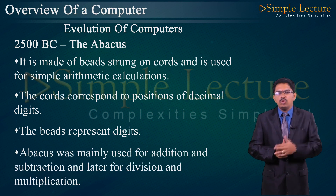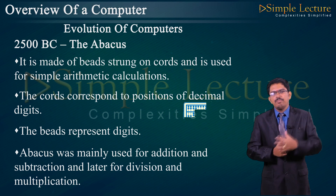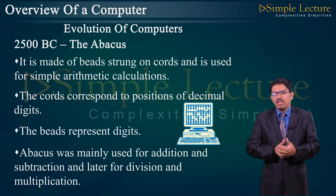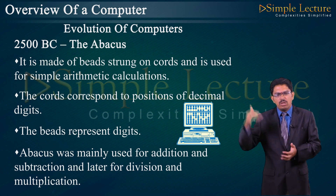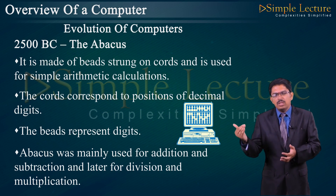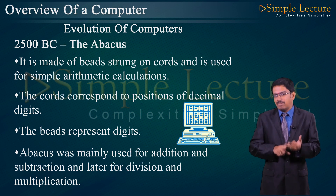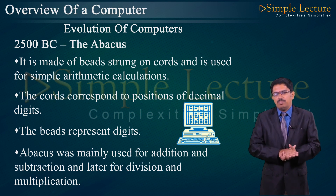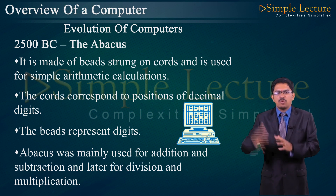Later the Abacus was also used for division and multiplication. Based on the number of beads, arithmetic operations are counted: one bead represents 1, seven beads represents 7, eight beads represents 8, and so on. Based upon this, addition and subtraction can be implemented.